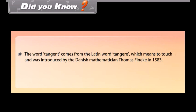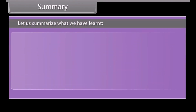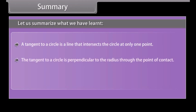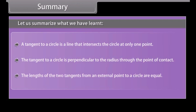Did you know? The word tangent comes from the Latin word TANGER, which means 'to touch,' and was introduced by the Danish mathematician Thomas Finnecki in 1583. Summary: A tangent to a circle is a line that intersects the circle at only one point. The tangent to a circle is perpendicular to the radius through the point of contact. The lengths of the two tangents from an external point to a circle are equal.